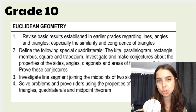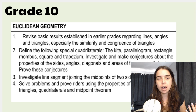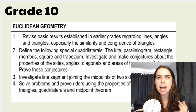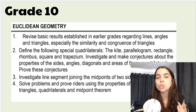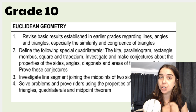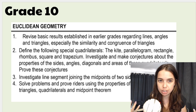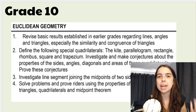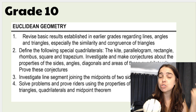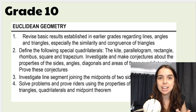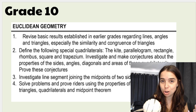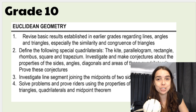Euclidean geometry is not new. Maybe you didn't call it Euclidean geometry in grade 9, but think about the geometry you did there — angles on a straight line, corresponding angles, co-interior angles, alternate angles, as well as similarity and congruency. All of that is Euclidean geometry. The ATP says to revise basic stuff from earlier grades regarding the geometry of straight lines, working with angles, triangles, similarity and congruency. I highly recommend going back to your grade 9 book and practicing grade 9 geometry — it will make grade 10 Euclidean geometry much, much easier.